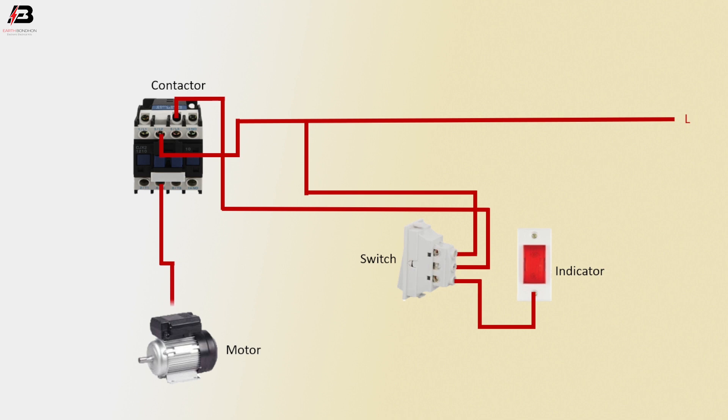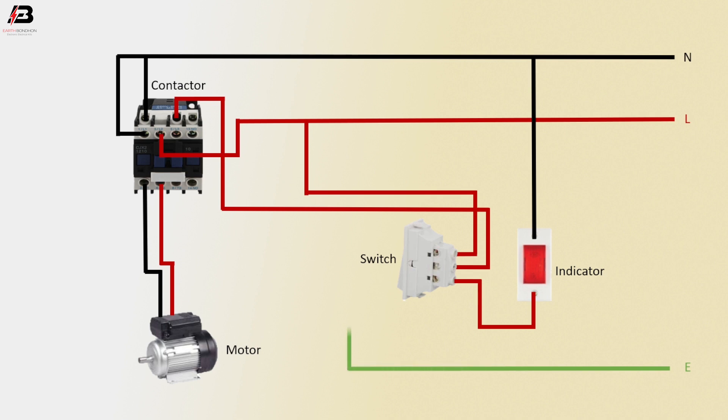Phase connection from magnetic conductor to connect motor. Neutral connection input to magnetic conductor L1 terminal. Neutral connection to coil connection. Neutral connection to indicator light. Neutral connection from magnetic conductor to connect motor. Earthing connection to motor.